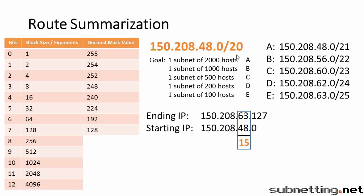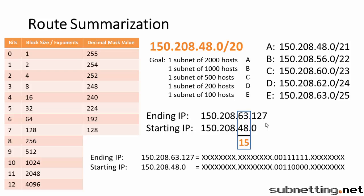Here's one more way to answer this question. Once we know the starting and ending IP, we could write those IP addresses in binary. We only care about the interesting octet. 63 in binary is 00111111. 48 in binary is 00110000. Now we simply count the bits that are all the same — that's bits 16, 17, 18, 19, 20. This is where it becomes different. So 20 bits are the same, and that's our answer: slash 20.